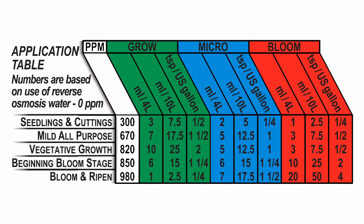To the right of the parts per million column, we have three more columns: grow, micro, and bloom. Each column is divided into three sections - milliliter per four liters, milliliter per 10 liters, and teaspoons per US gallon. Using the seedlings and cutting stage as an example, if our reservoir was 10 liters, we would add 7.5 milliliters of the grow formula, 5 milliliters of the micro formula, and 2.5 milliliters of the bloom formula.